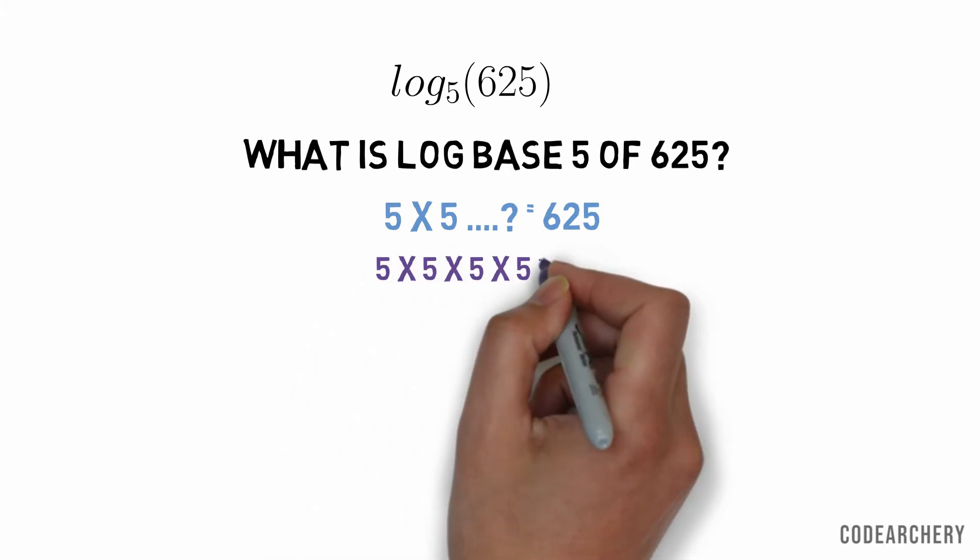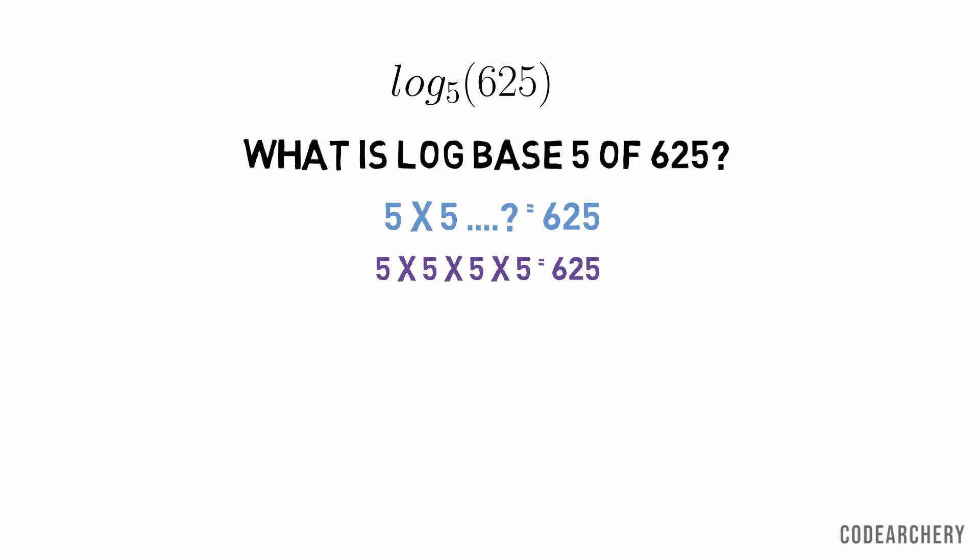We need to multiply 5 four times to get 625. So we can say that log base 5 of 625 is 4.